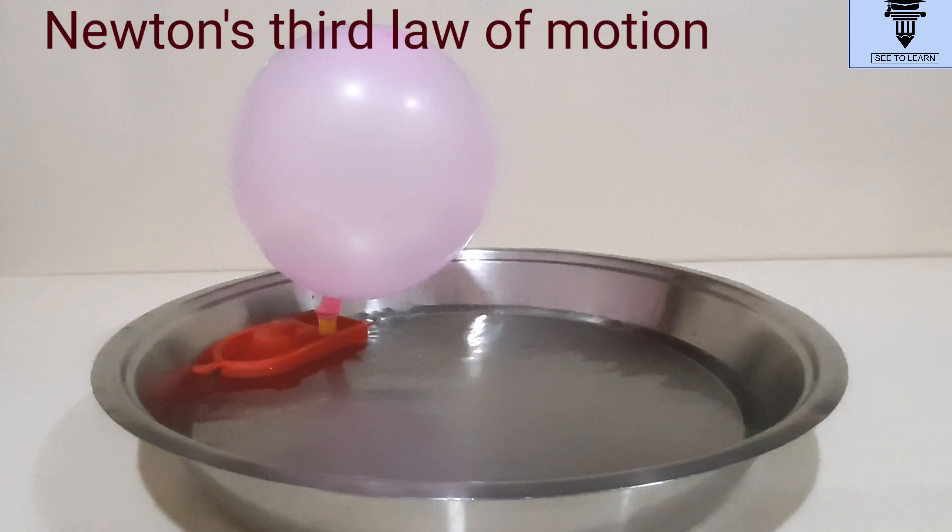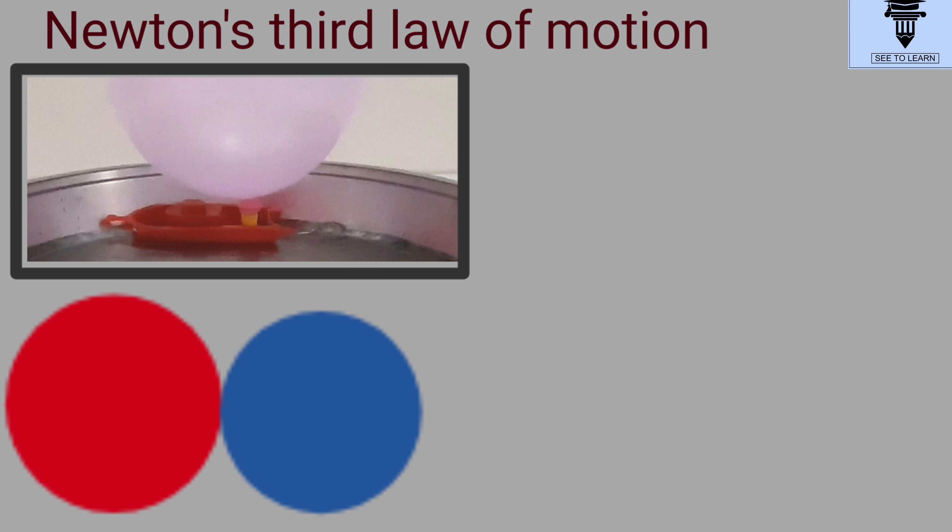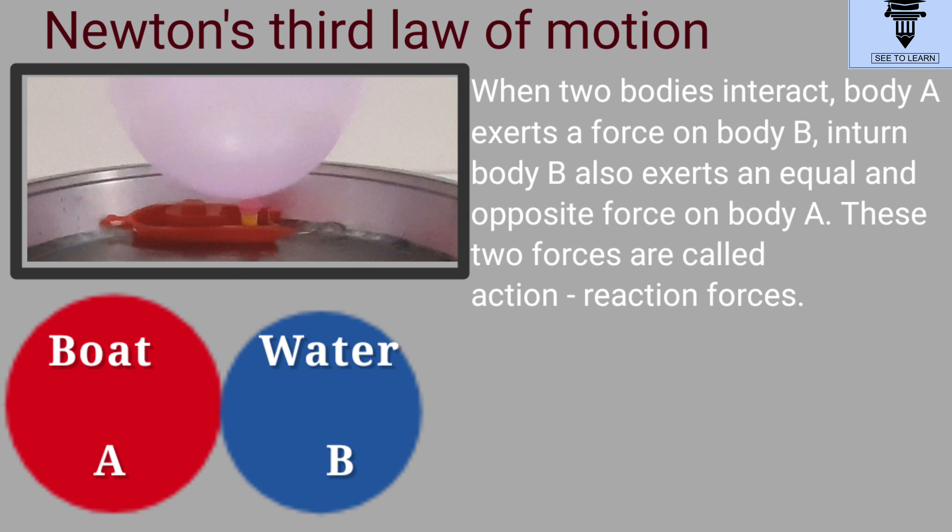This is what Newton's third law of motion says. When two bodies, say body A and body B, interact, body A exerts a force on body B. In turn, body B also exerts an equal but opposite force on body A.